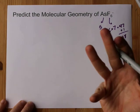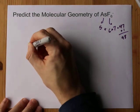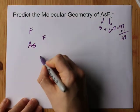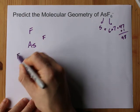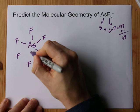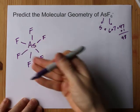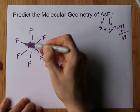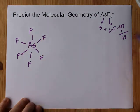I'm about to draw the Lewis structure. I'm putting my arsenic in the center, surrounding it with 6 fluorines, and then I'm going to single bond each of those because I need each one to be bonded, otherwise it's not a molecule. That's 2, 4, 6, 8, 10, 12 valence electrons accounted for. I need 48 total.